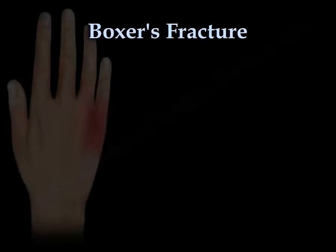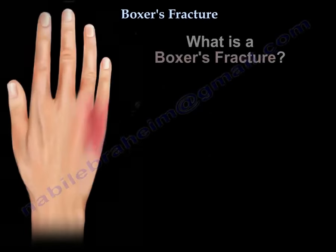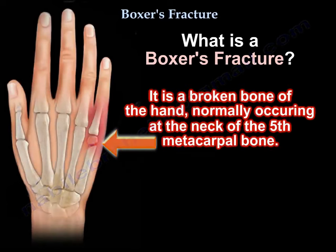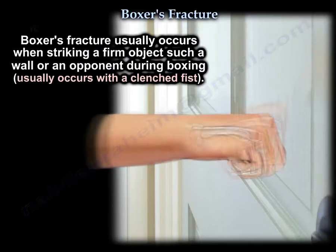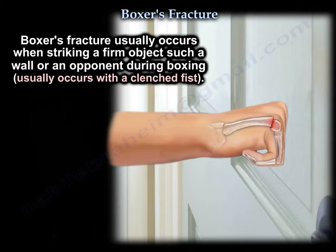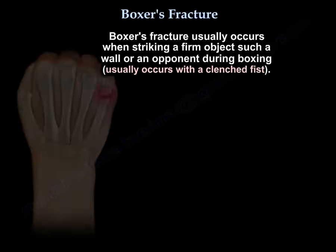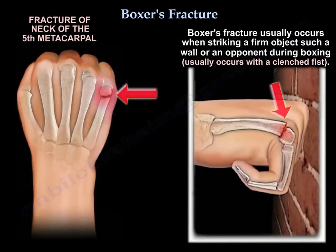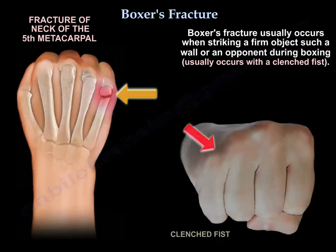Boxer's fracture is a broken bone of the hand. Normally it occurs at the neck of the fifth metacarpal. It usually occurs when striking a firm object — it can be a wall or maybe an opponent during boxing — and that usually happens with a clenched fist.